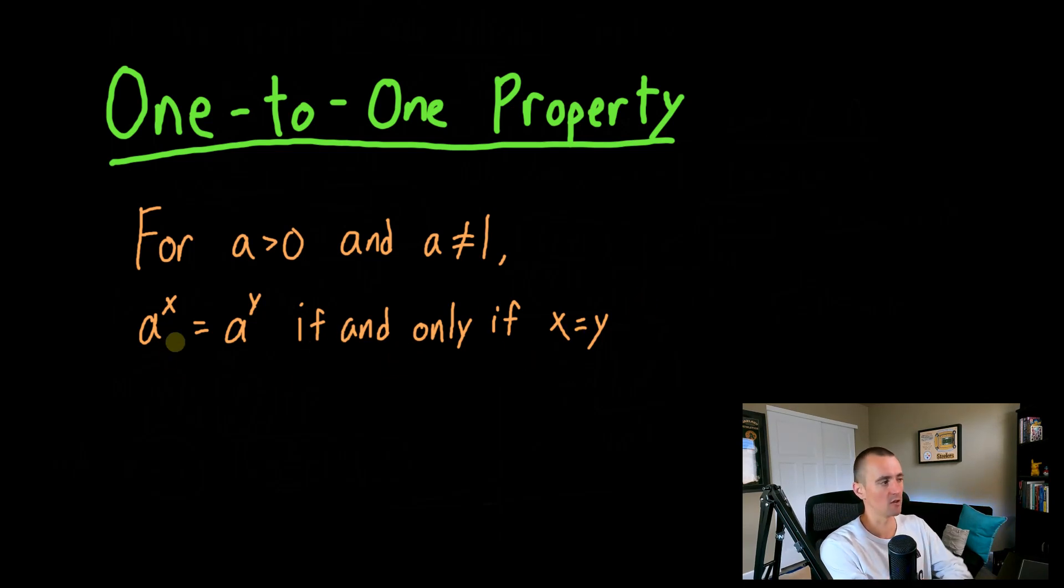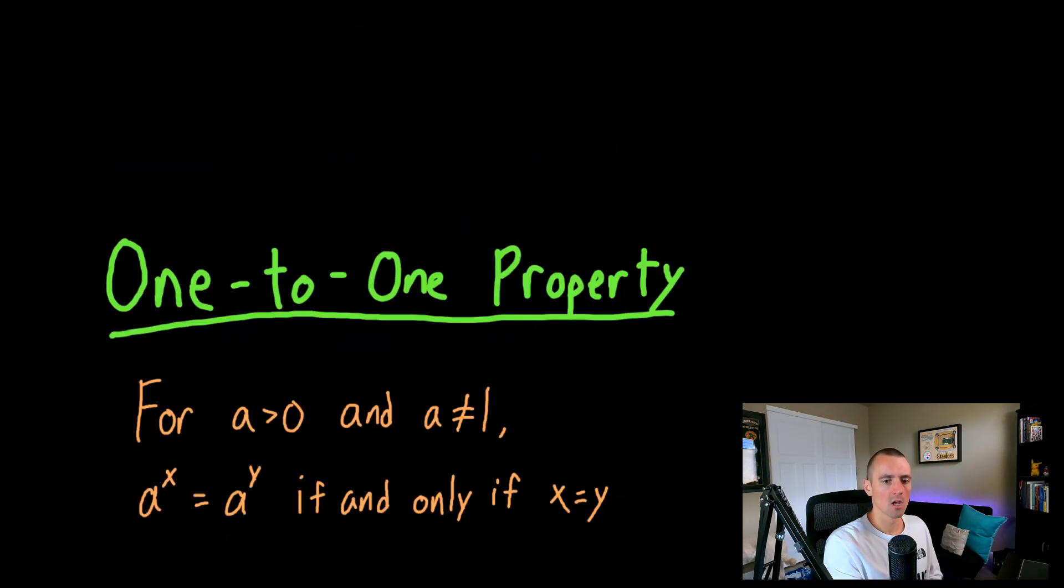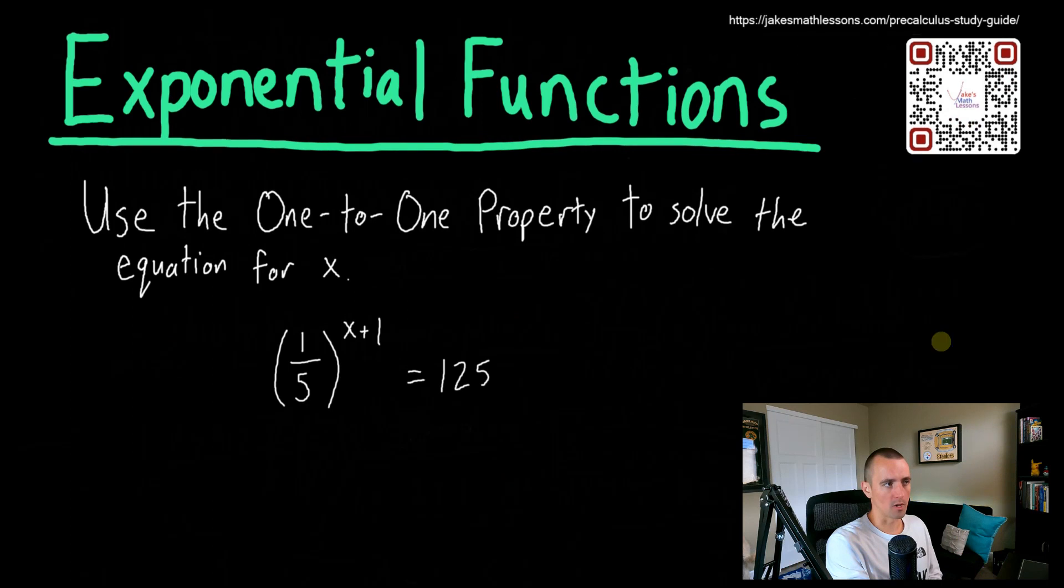So if and only if means these two things will be equal to each other if x equals y, and there's no other scenario where these two things will be equal other than if x equals y. So the important piece with that is you need a to be a positive number and it can't equal one. So we can use this one-to-one property to solve equations like this by simply making sure that we can adjust our equations to have the same base raised up to two different powers. Because if they have the same base, the one-to-one property tells us that their powers must be equal to each other, as long as that base is not one.